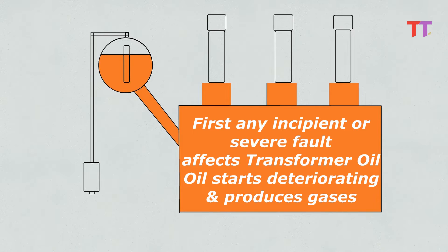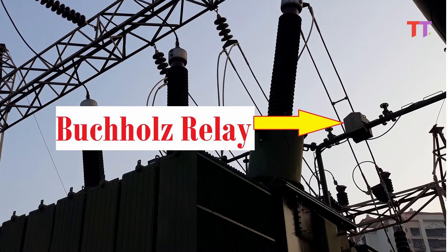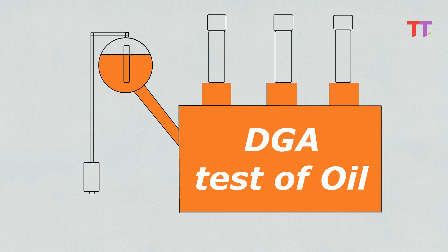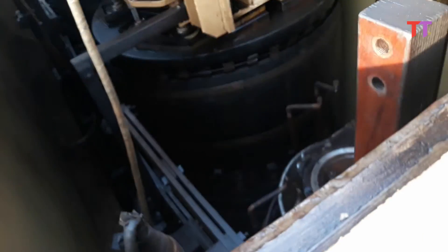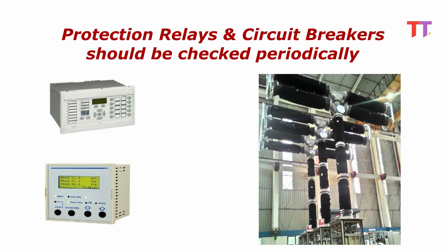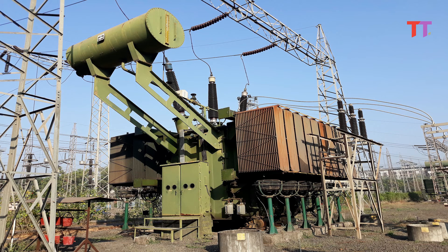Any incipient or severe fault affects transformer oil — oil starts deteriorating and produces gases. These gases trigger Buchholz relay or can be identified during DGA test of oil. If any gases are identified indicating a fault, then immediately transformer internal inspection should be done — windings, leads and core should be checked for any insulation damage or any other fault. Protection relays and circuit breaker should be checked periodically so that they function efficiently during fault and isolate the faulty portion effectively. This effective fault isolation avoids excessive stresses on the power transformer, preventing it from possible explosion.